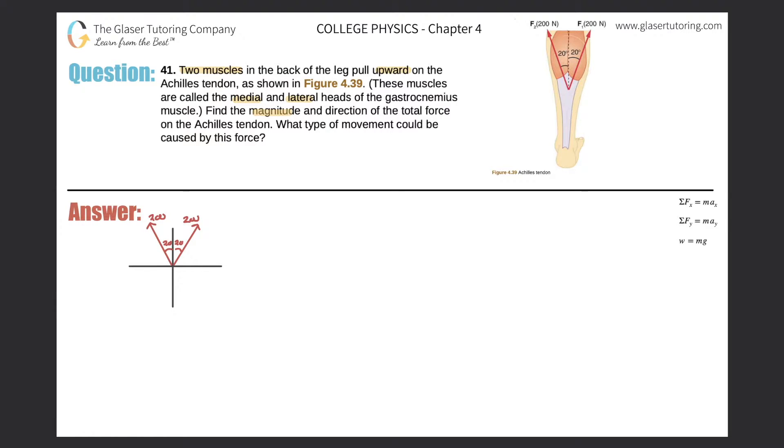Anyway, find the magnitude and direction of the total force on the Achilles tendon. So what type of movement could be caused? Here I have drawn out a free body diagram that details exactly what's going on in the picture on the upper right. We got two forces. Each medial and lateral head is pulling with 200 newtons worth of force at an angle 20 degrees relative to the y-axis.